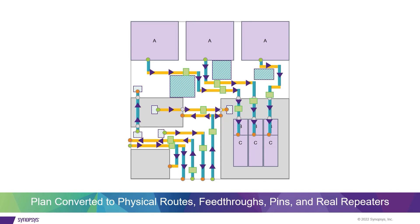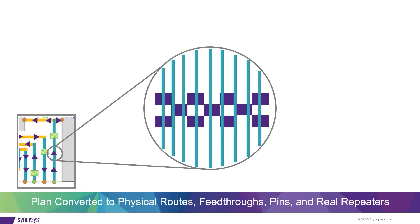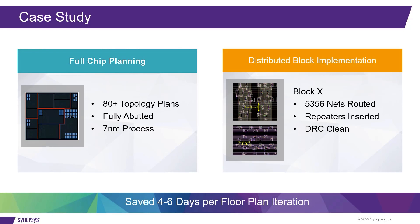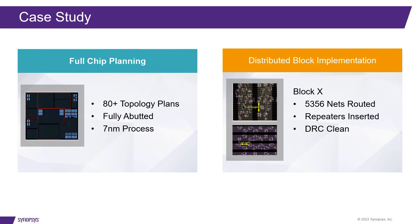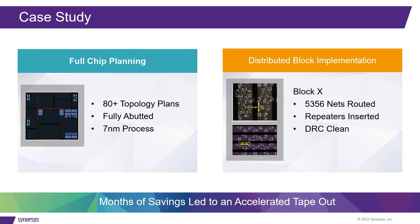Final implementation is through a push-button style that fully converts the plan to physical routes, feed-throughs, pins, and real repeaters. A full-chip plan in a customer case study reported a reduction of 4 to 6 days per floorplan iteration, while 80-plus topology plans were used for a fully abutted 7nm design. These results achieved the highest level of overall chip performance with months of savings, leading to an accelerated tape-out.